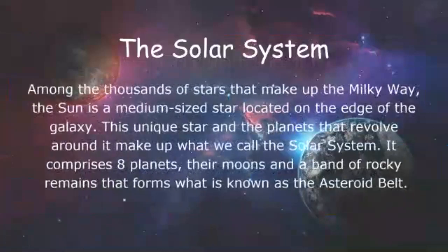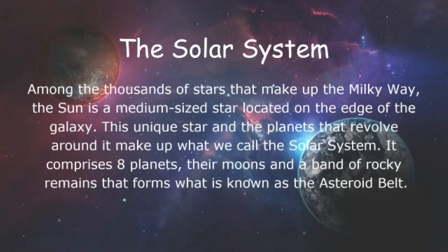The solar system. Among the thousands of stars that make up the Milky Way, the sun is a medium-sized star located on the edge of the galaxy. This unique star and the planets that revolve around it make up what we call the solar system. It comprises of eight planets, their moons, and a band of rocky remains that forms what is known as the asteroid belt. This asteroid belt contains asteroids and it is located between the orbits of Mars and Jupiter. There is also the Milky Way — this is our galaxy's name, and for more information, do check my previous video.